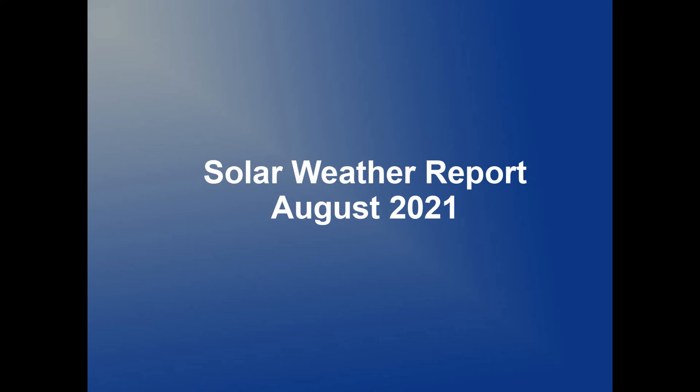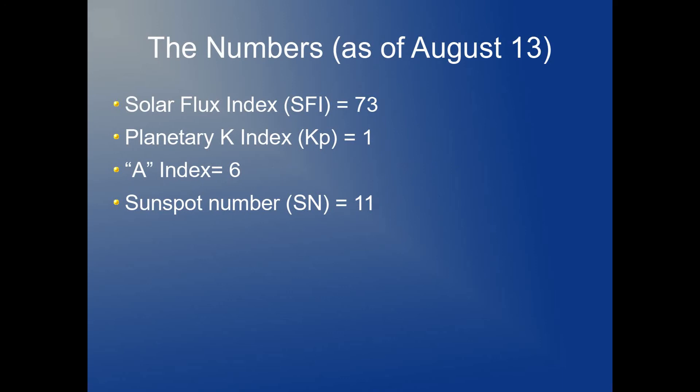Solar Report August 2021 from August the 13th. So far this month we've had calm solar conditions and at present we have one sunspot active on the solar disk. The sunspot number is at 11, which means that we currently have one sunspot area containing one sunspot. The Kp planetary index is at 1 while the A index shows 6. The solar flux index or SFI is at the low value of 73.